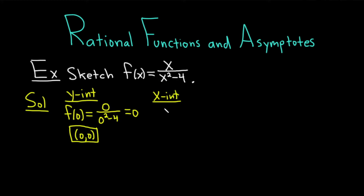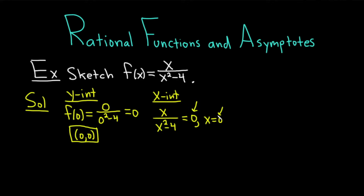The x-intercept is actually the same. The general procedure for finding the x-intercept is you take your entire function, x over x squared minus 4, and set it equal to 0. Whenever you have a fraction equal to 0, the numerator is automatically 0. In this case, we just get x equals 0. So the ordered pair is the same — when y is 0, x is 0. We get (0, 0) as our x-intercept.